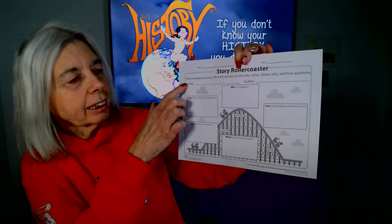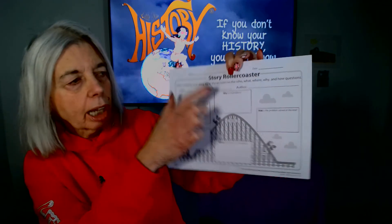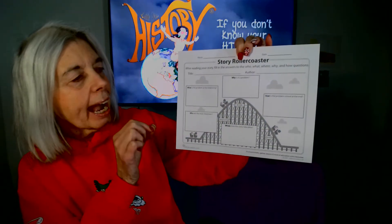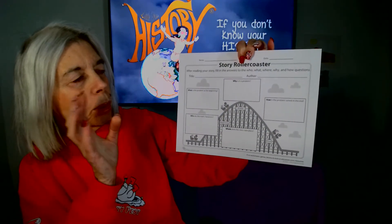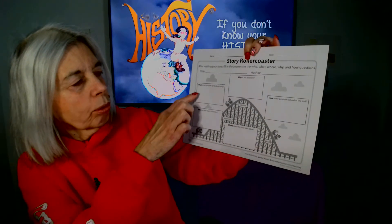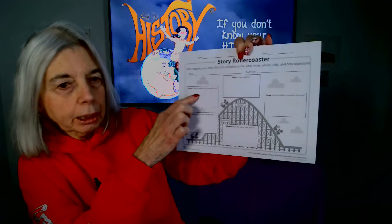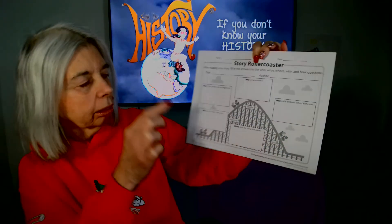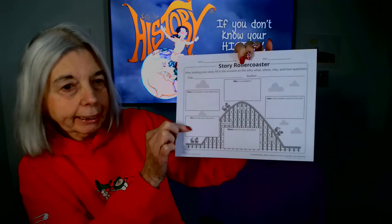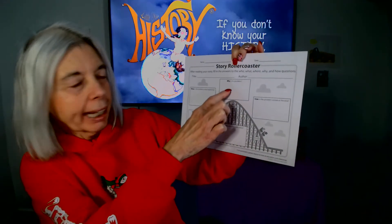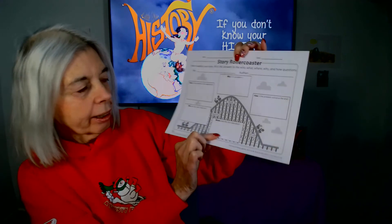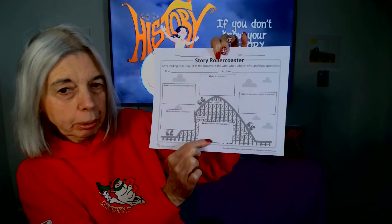Ask the student to write the title of the story on the top and the author of the story. Then, going back and thinking carefully about what was read, write down: What is the problem in the story? Who has that problem? Why is it a problem? Where does the story take place?